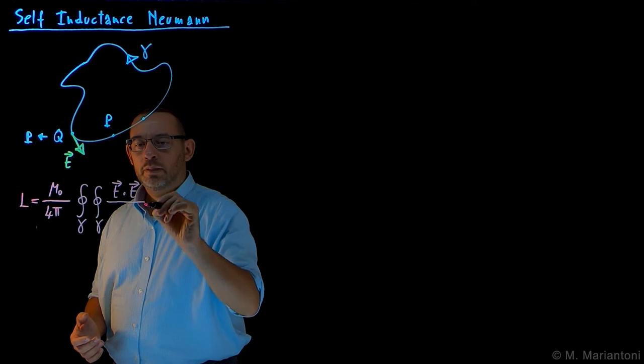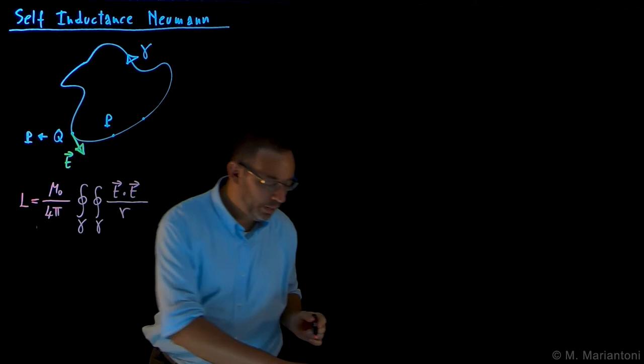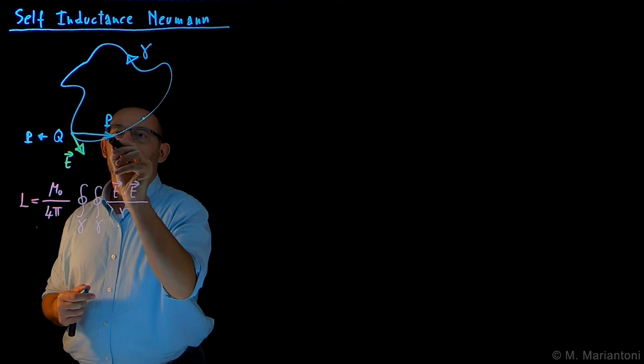Of t dot t, divided by, let's just call it r, which is the distance between two points. For example, r could be this distance here, if q and p are not the same. dL times dL.